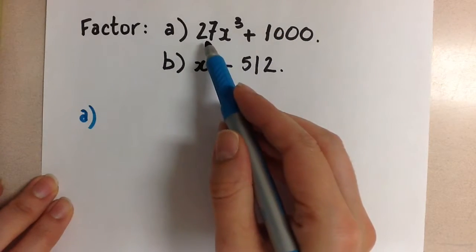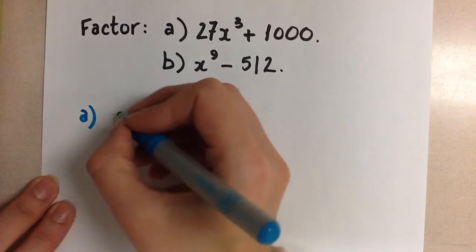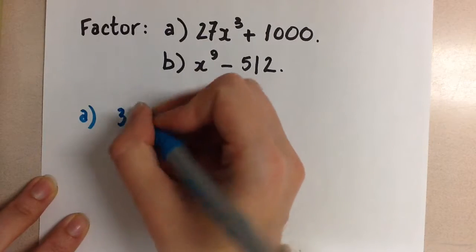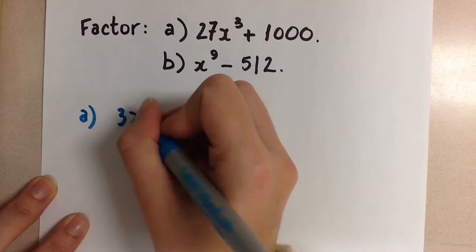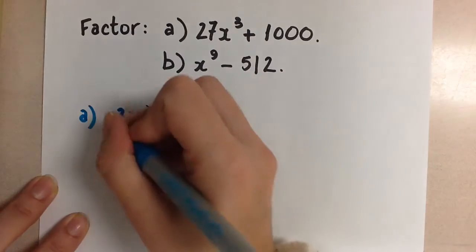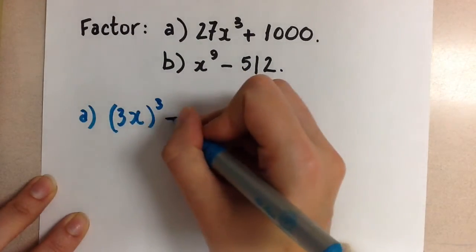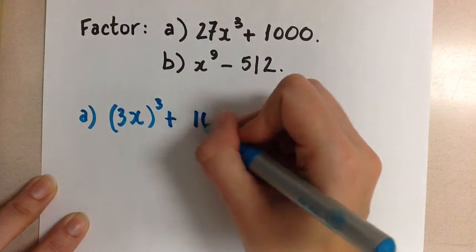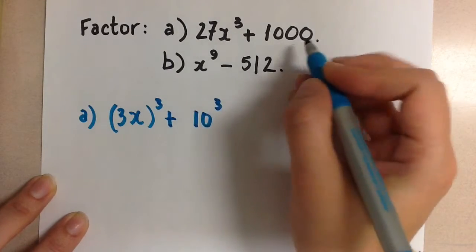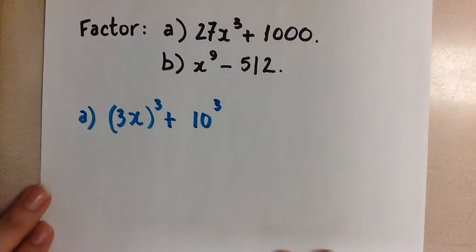So 27 can be rewritten as 3 cubed, and we have that x cubed as well. So this would be 3x all cubed plus 10 cubed, because that's 1000. So we have to do this step first before we can use our formula.